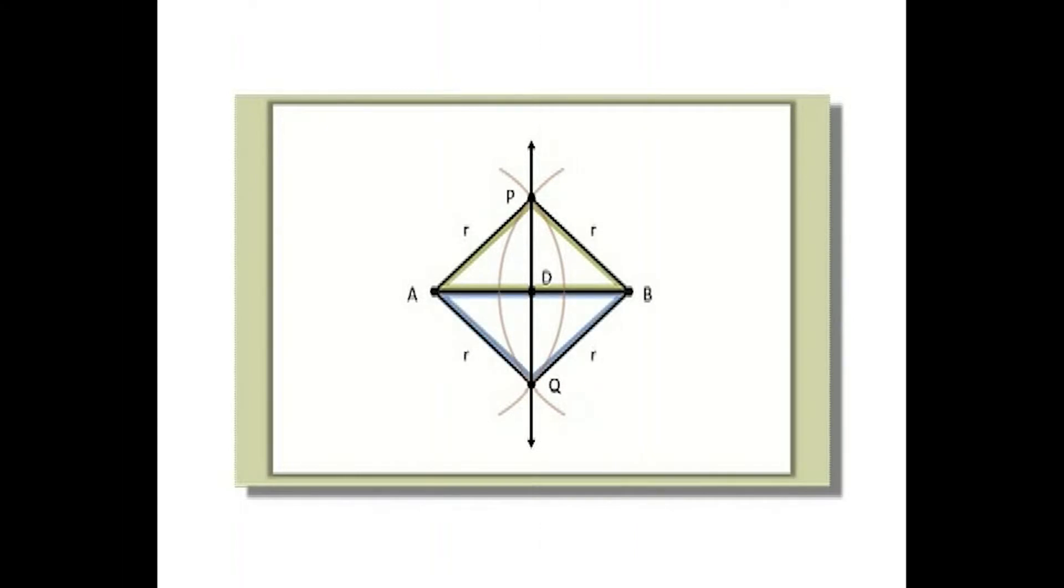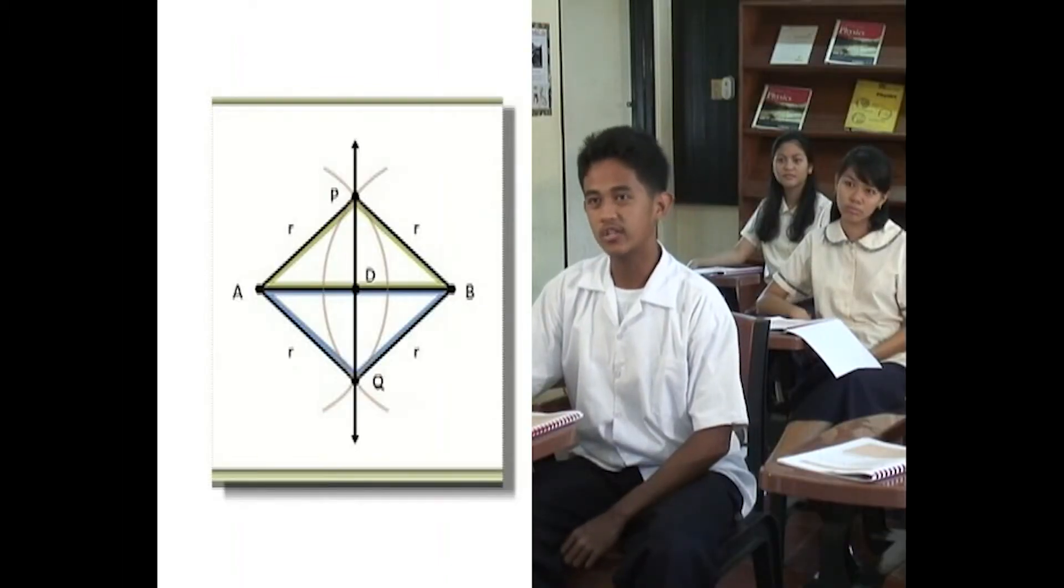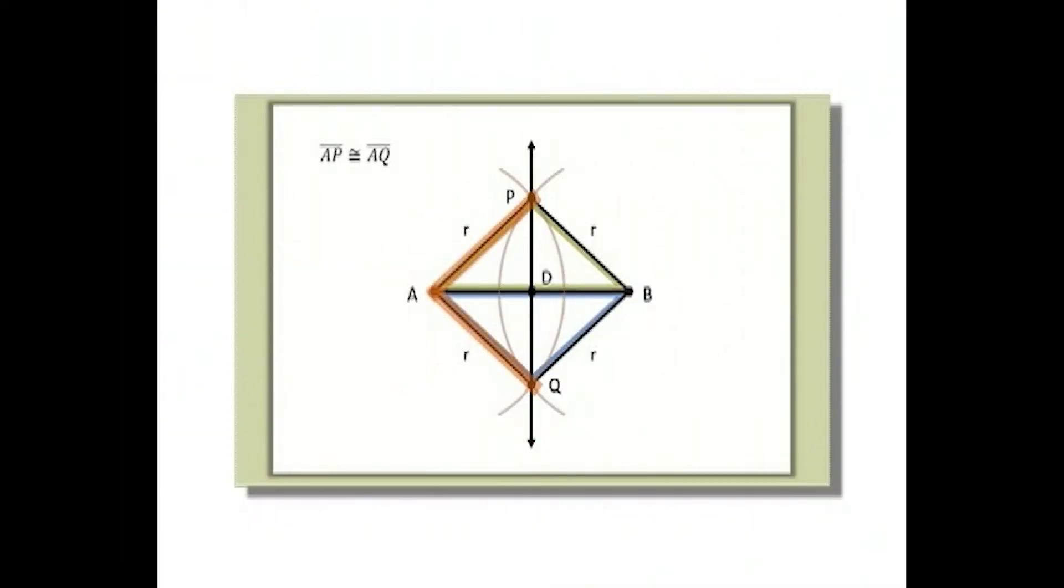Are these two triangles also congruent? Yes, ma'am. By the side-side-side criteria. Which sides are you referring to? Well, AP is congruent to AQ. BP is congruent to BQ. And triangles PAB and PAQ share a common side AB, which is congruent to itself. That's three pairs of corresponding congruent sides. Very good, Domes.